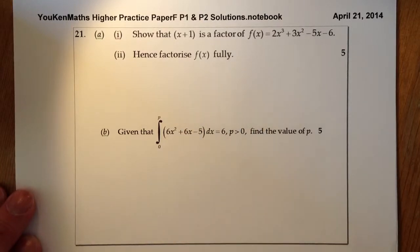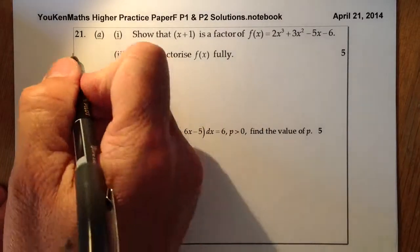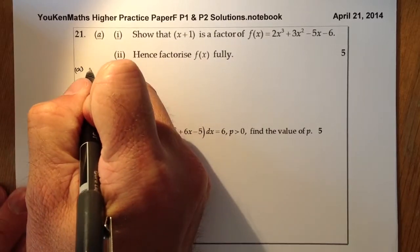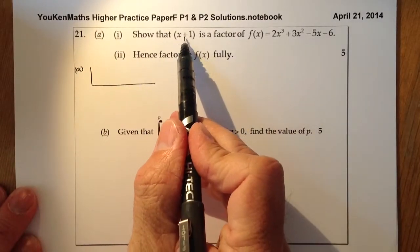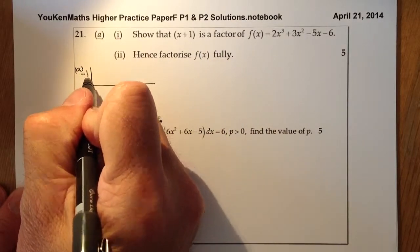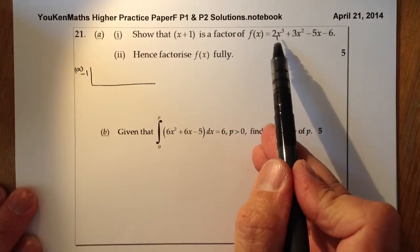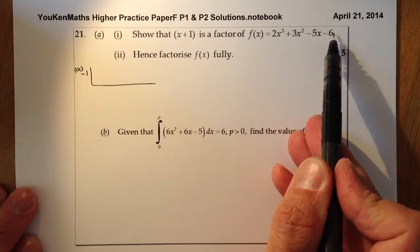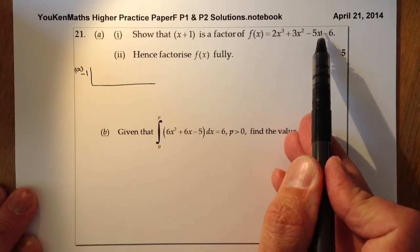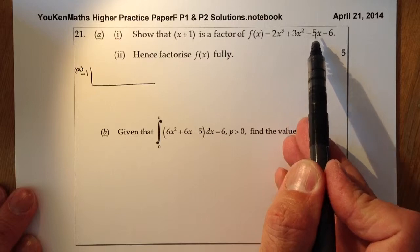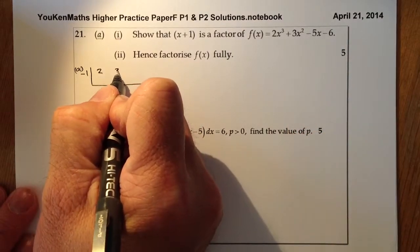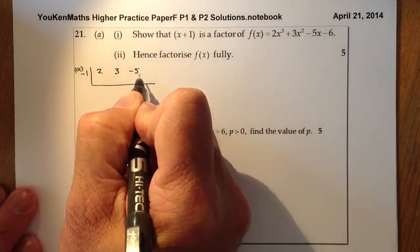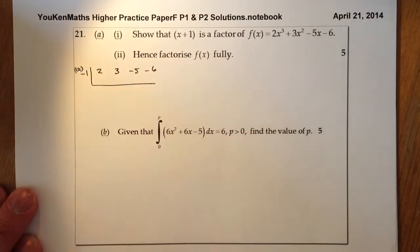We'll set up some synthetic division for part A. Outside of the division, if that's x + 1, we'll have a -1 sitting out here. I'll look at the coefficients of each of these and write them down, making sure there's no powers missing. So 2, 3, -5, and -6.